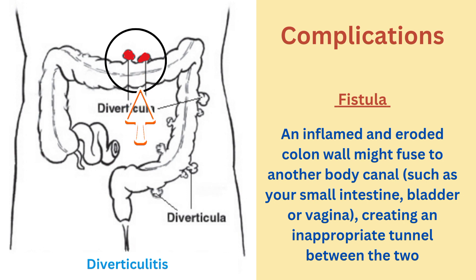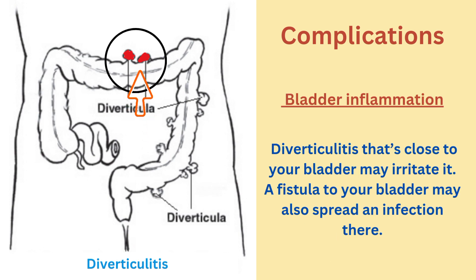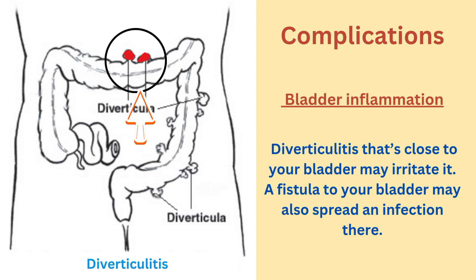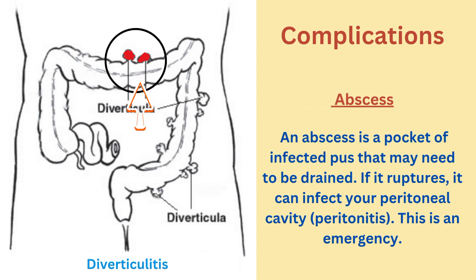Another complication is a fistula — an inflamed and eroded colon wall might fuse to another body canal such as your small intestine, bladder, or vagina, creating an inappropriate tunnel between the two. Bladder inflammation is also a complication; diverticulitis close to your bladder may irritate it, and a fistula to your bladder may also spread infection there.